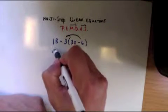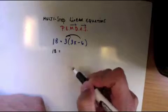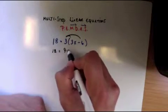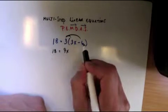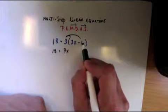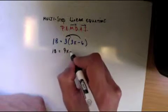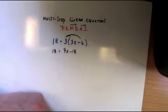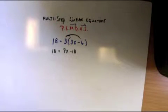Just so that we don't have to worry about that. 3 times 3 is 9, and 3 times negative 6 - remember you have to use that sign in front - that's a negative 18. Okay, so everything is distributed.